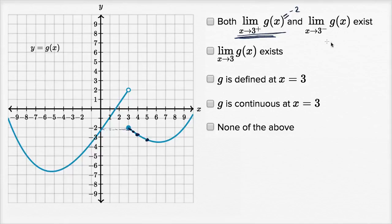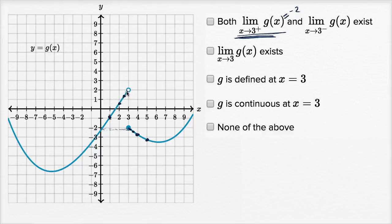Now thinking about it from the left-hand side: g of one looks a little greater than negative one, g of two is less than one, g of 2.5 is between one and two, g of 2.9 looks a little less than two, g of 2.99 is getting even closer to two, and g of 2.99999 would be even closer. So the left-hand limit is approaching two. Both limits — from the right and from the left — exist.